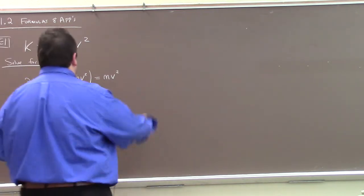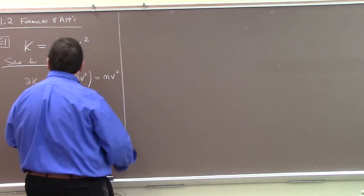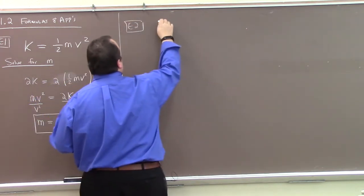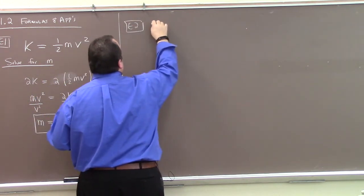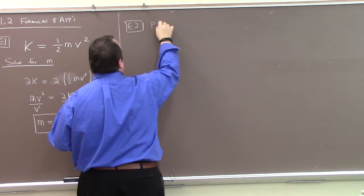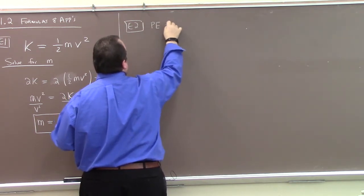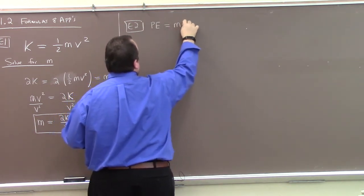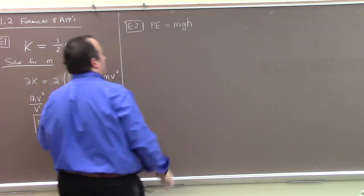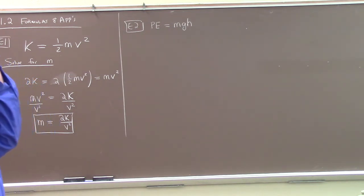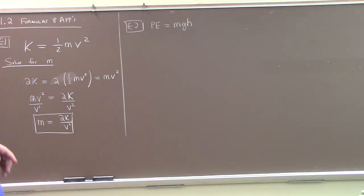Example two: potential energy. PE equals mgh. This is another example from physics — potential energy is mass times gravity times height. You could ask a question like: if the potential energy is equal to 1,000 joules, what would h be?